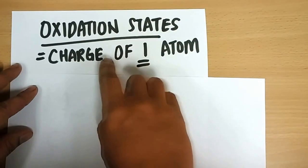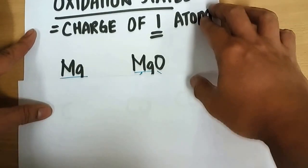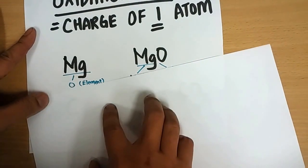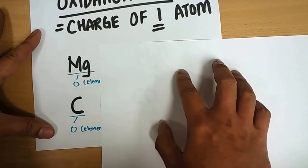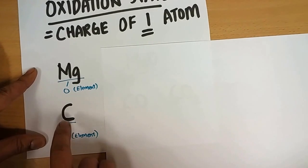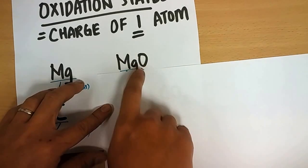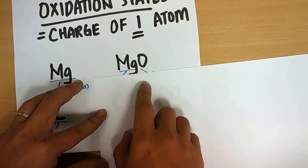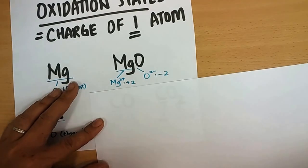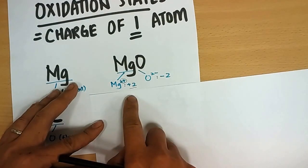Oxidation state just refers to the charge of one atom of an element. The rule is: if you are a pure element like magnesium or carbon, your oxidation state will be zero — your atom basically has no charge. But when you form a compound with another element, such as magnesium oxide, both atoms will be charged and you get ions. So you get Mg²⁺ and because this is charged, you get an oxidation state of plus two.